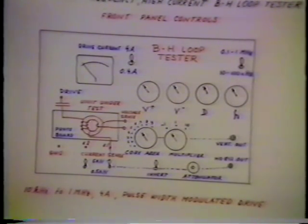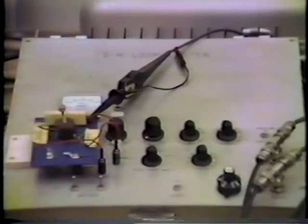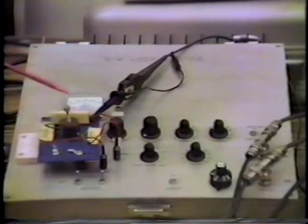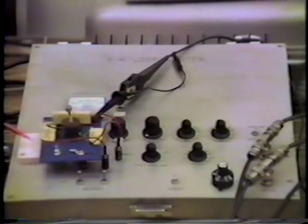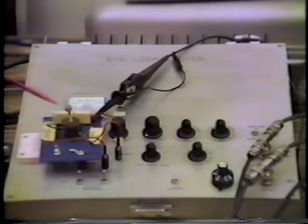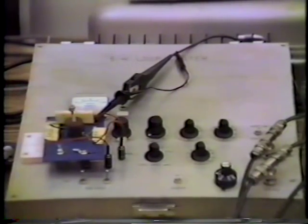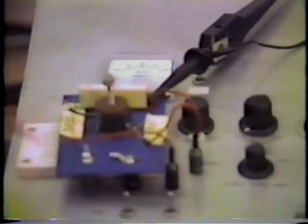If we now go to the experimental setup, we can see our BH loop tester, then unit under test, which is plugged into the matrix board. This is a single winding inductor, which is driven with the voltage source on input side. At the moment, about 15 volts, plus minus 15 volts is applied to the winding.